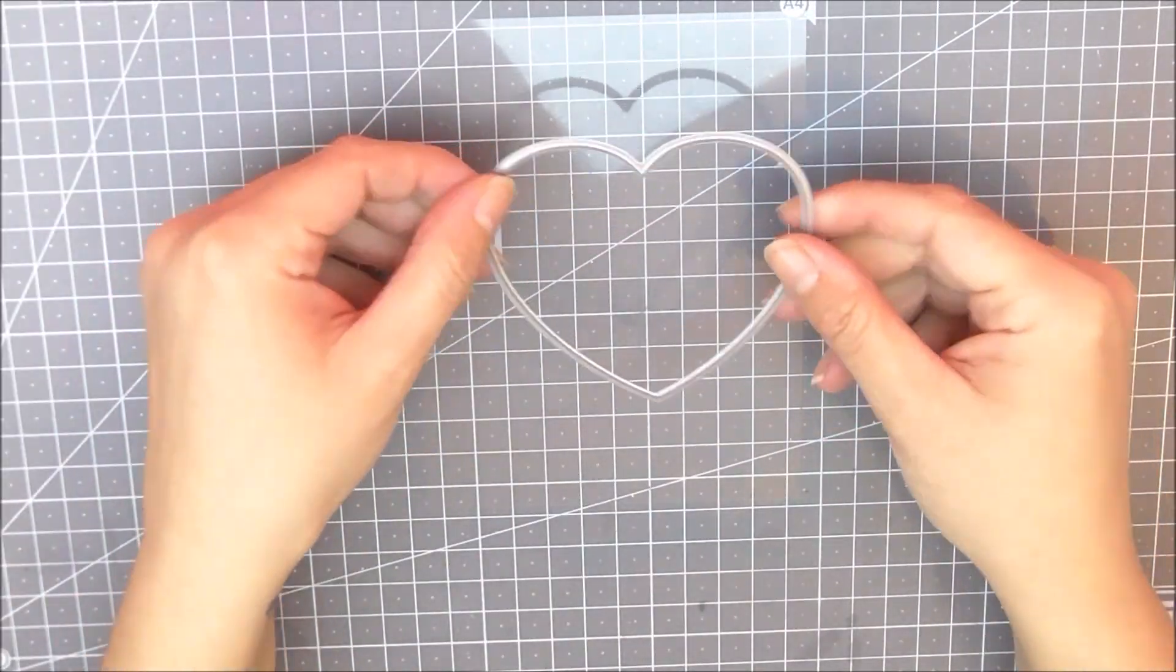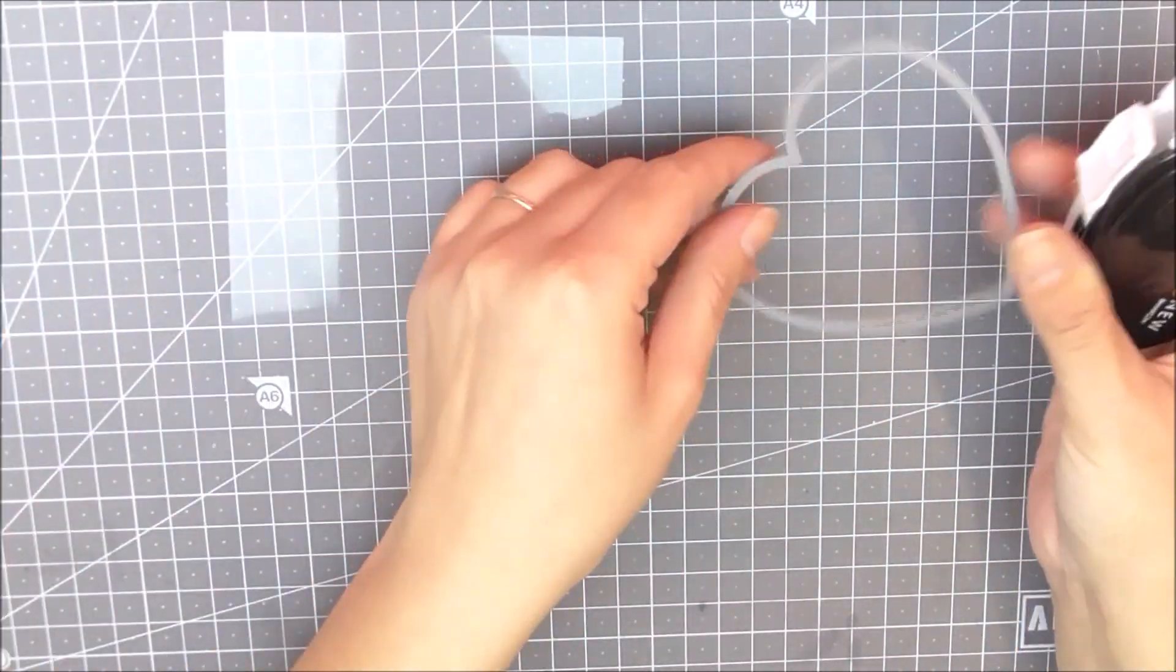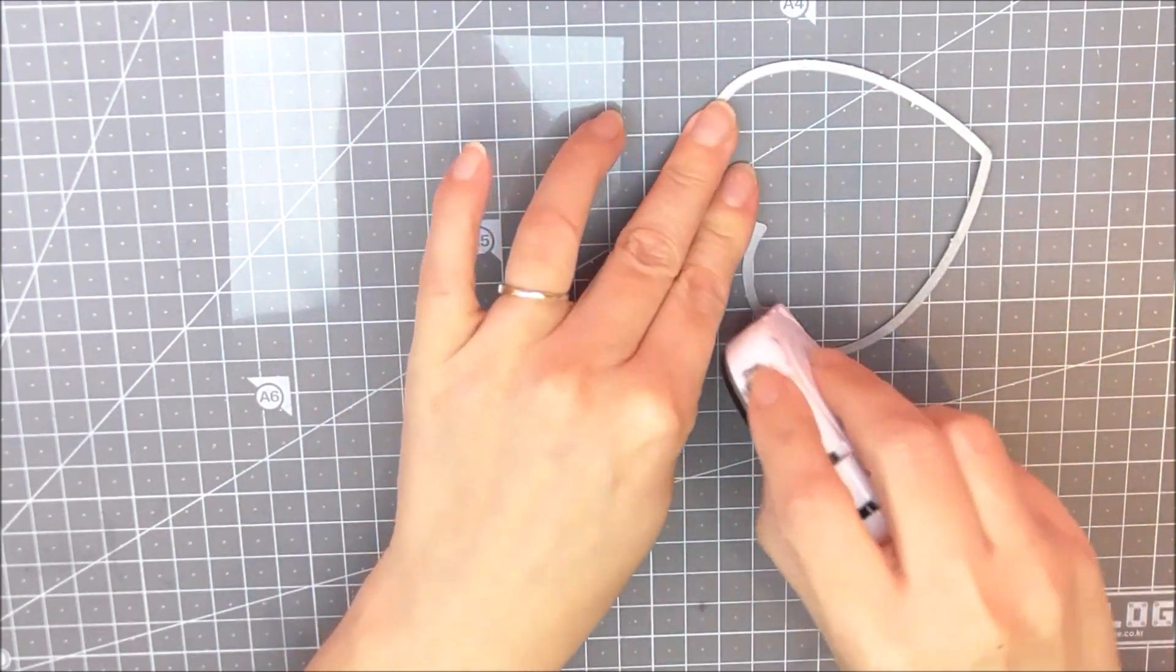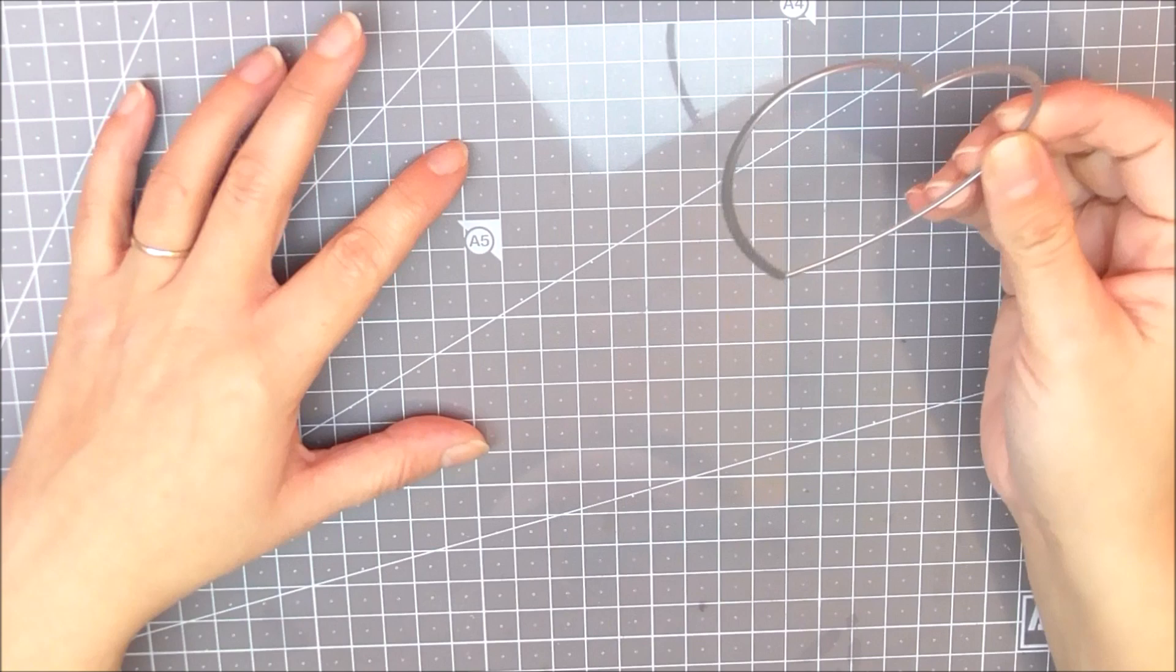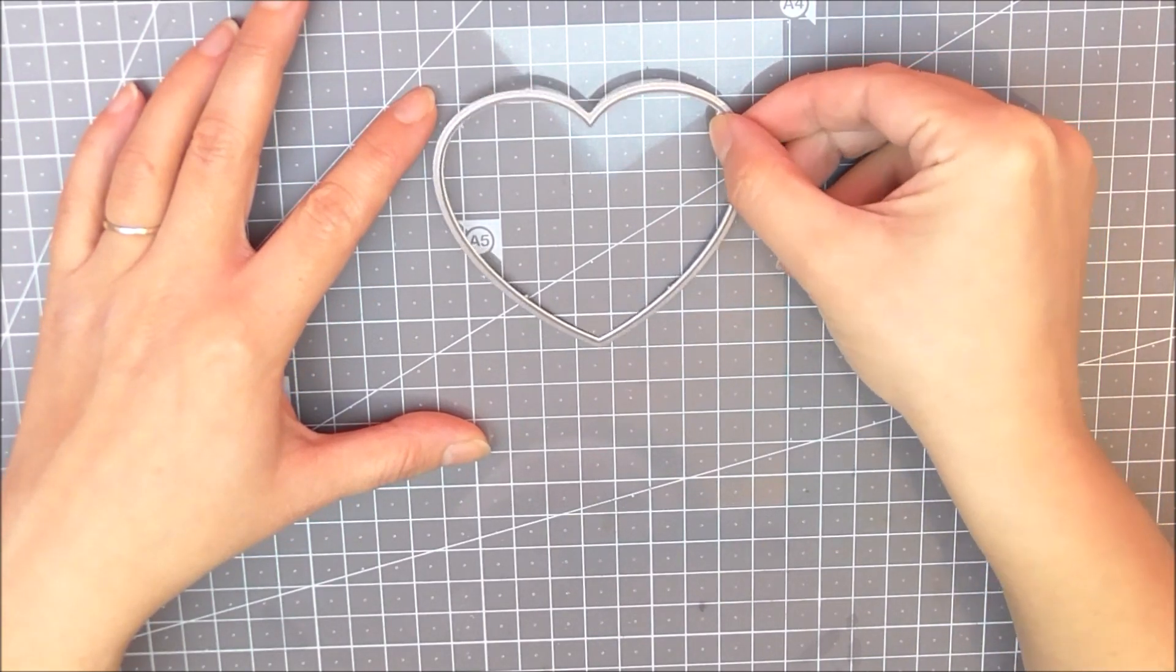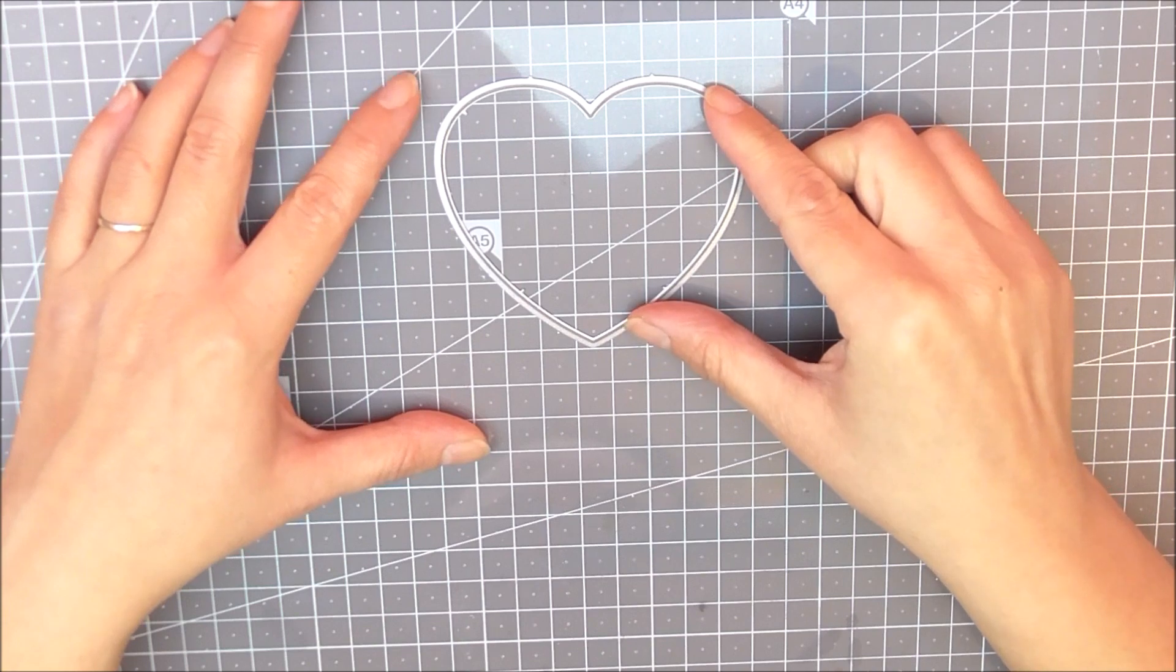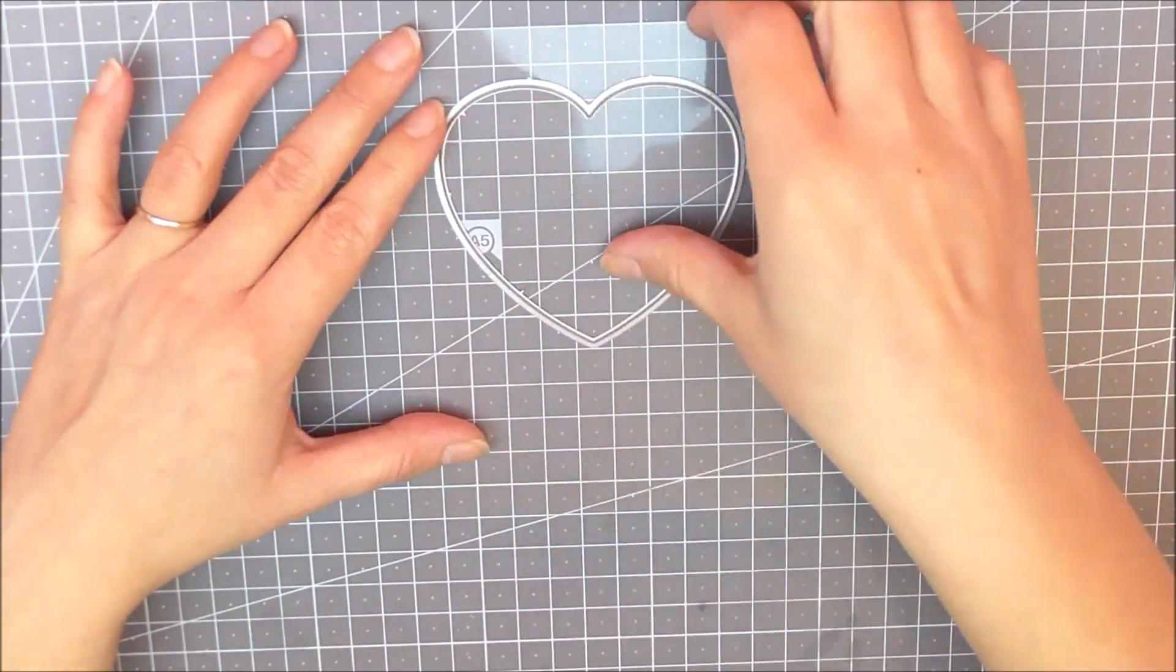I'm then going to take one of the hearts from the Nesting Hearts die set and add a little bit of glue tape behind this, then attach it to my piece of acetate. This is going to act as a guide, so I'm placing this exactly where I want it to be on my card base and card panel. This is going to cut all of the pieces in exactly the same way so that the windows are in the same place on each piece.